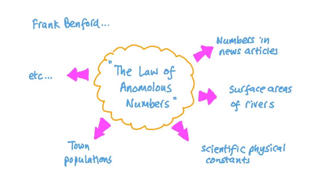Nearly 60 years later, a physicist called Frank Benford independently noticed the non-uniform distribution of first digits in a whole range of data sets from the population of towns, the values of physical constants, statistical numbers used in news articles, surface area of rivers, and more.